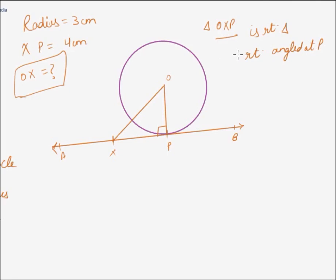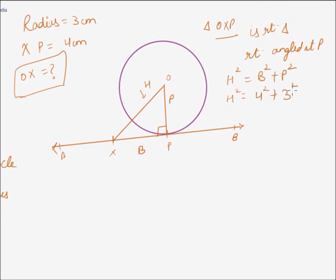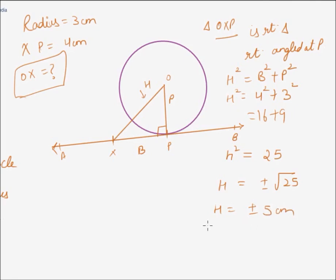Since it is a right triangle, the Pythagorean theorem is applicable: hypotenuse squared equals base squared plus perpendicular squared. Here, OX is the hypotenuse, OP is the perpendicular equal to 3 cm, and XP is the base equal to 4 cm. So OX squared equals 4 squared plus 3 squared, which equals 16 plus 9, giving hypotenuse squared equal to 25. This gives hypotenuse as plus or minus the square root of 25. Since length can never be negative, rejecting the negative value, OX equals 5 cm.